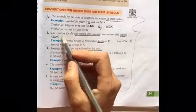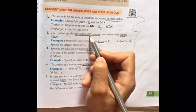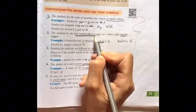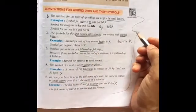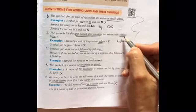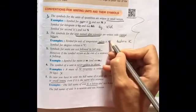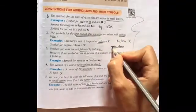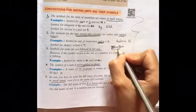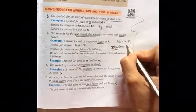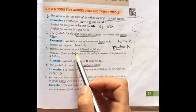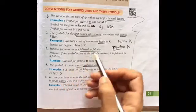Now the symbols for the unit named after scientist. If there is a unit of a scientist, then we are going to use the capital letter. Like Kelvin, capital K. Newton, capital N. Celsius, capital C, degree C.